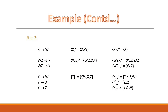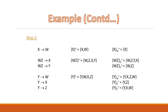Our last functional dependency is Y to Z. On removing this FD, the closure of Y becomes Y, X, and W — differing from the original closure. So we cannot remove it; this is also an essential one. I have marked all the essential and non-essential functional dependencies with tick marks and cross marks respectively.